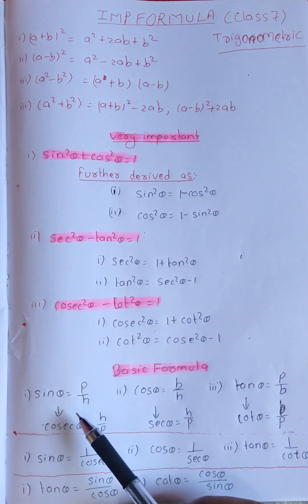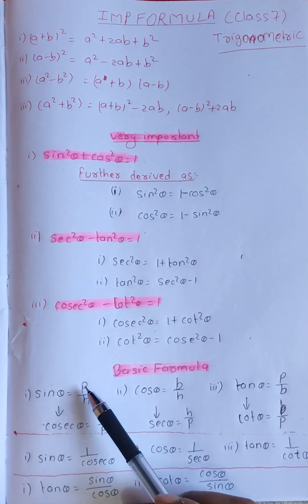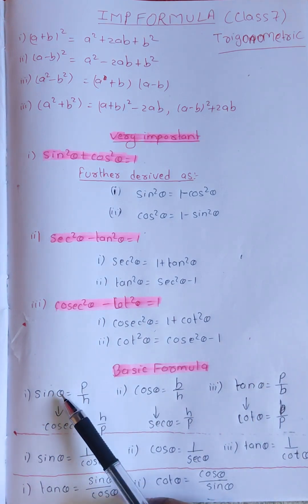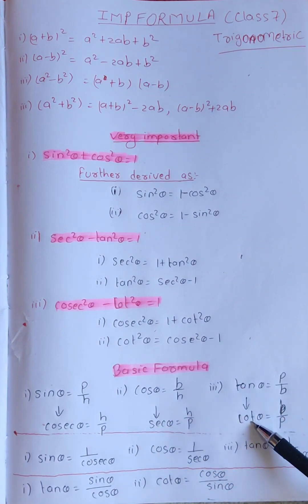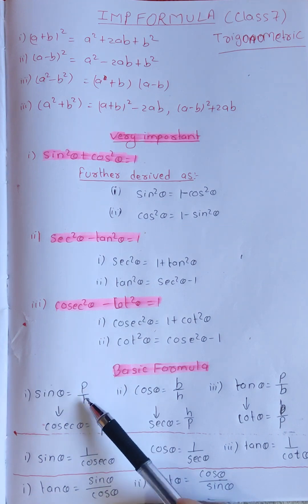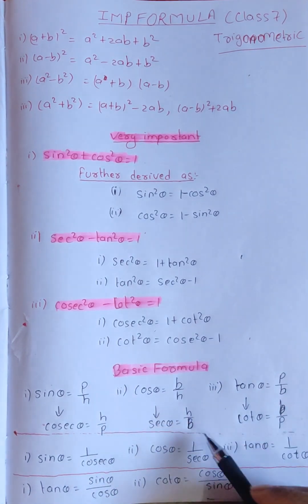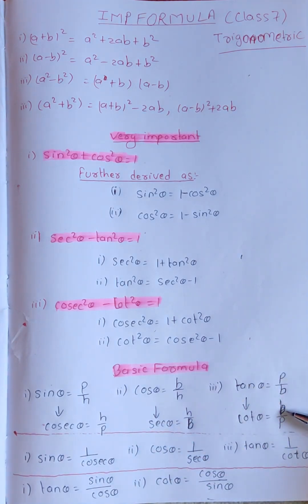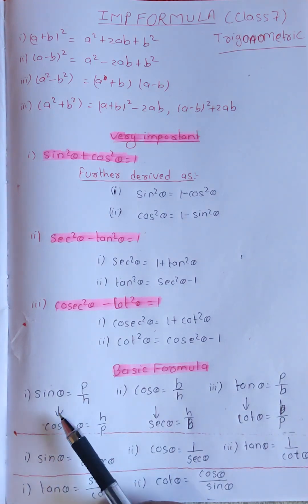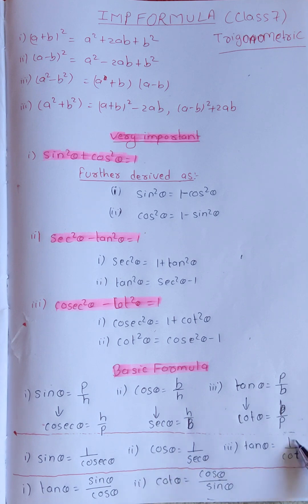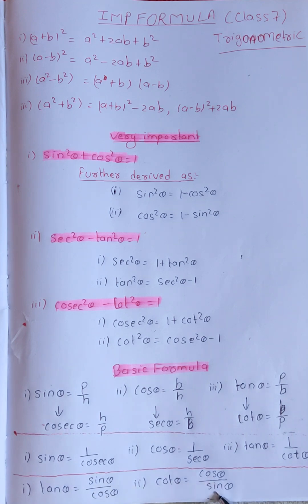Now we have to review the class. Sin theta is equal to P by H. We have sin theta related to cos squared theta. Sine theta equals P by H; cos theta equals B by H. If you see tan, the relationship is P by B. Then you see B by P. The equation is based on 1 by cos theta. I think class 7 content is enough. So, I will try to solve all the questions.